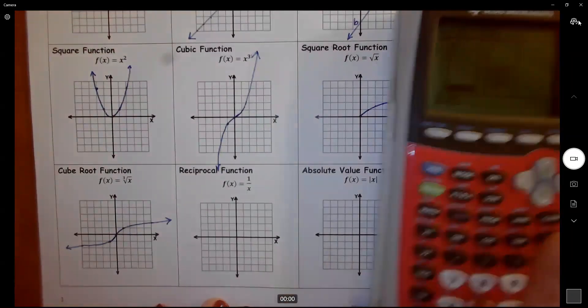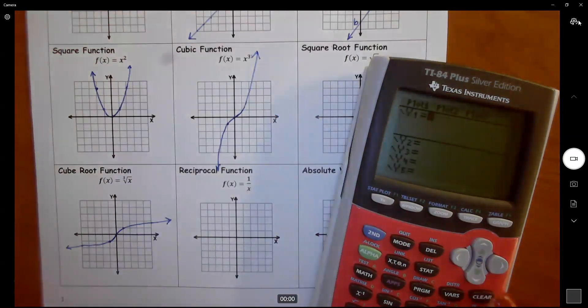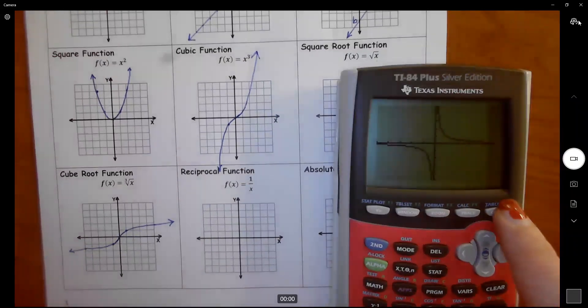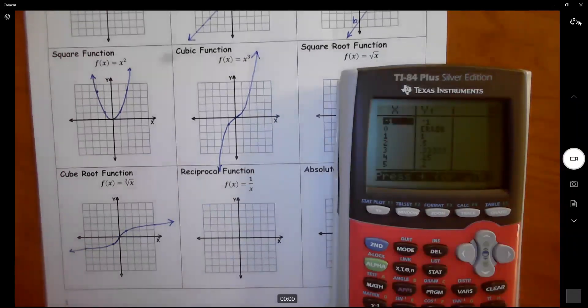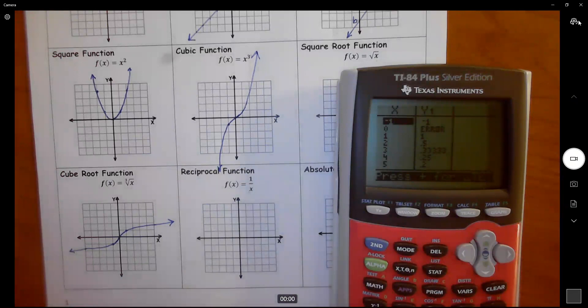We have a reciprocal function, so 1 divided by x. We're going to learn more about these. This is considered a rational function where we have an error at 0 because I cannot divide by 0.